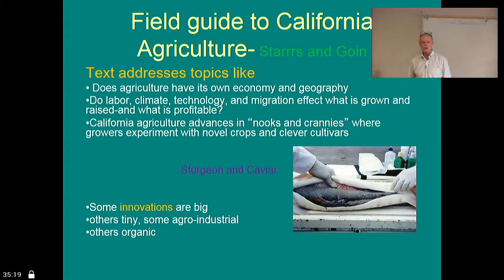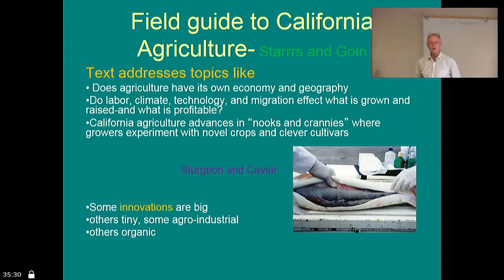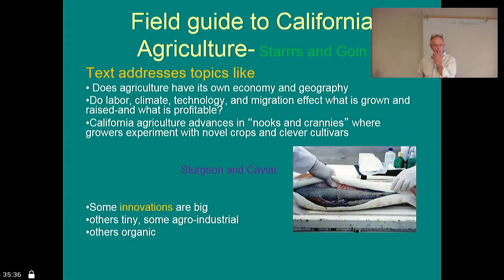The textbook is Field Guide to California Agriculture by Stars and Goine. It's a little bit flowery written, but just enjoy it — they're kind of trying to tell a story. It talks about things like: does California have its own economy and geography, and what's the role of agriculture in that?